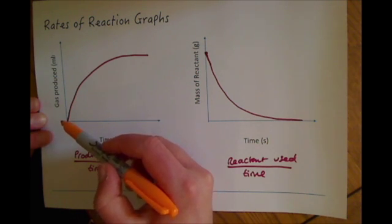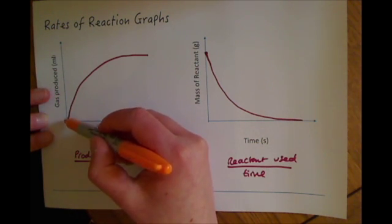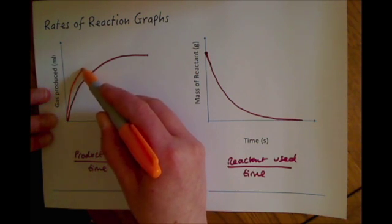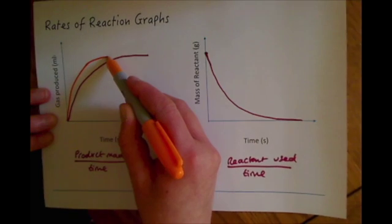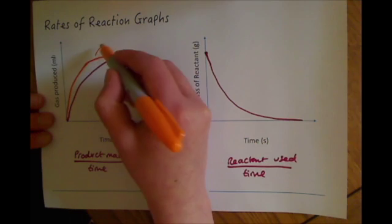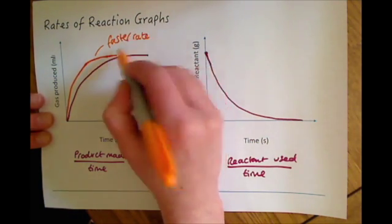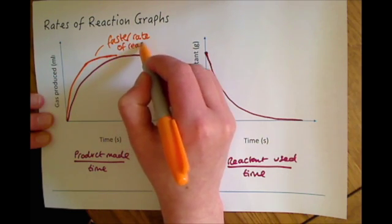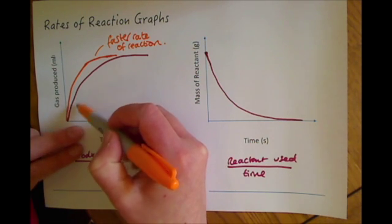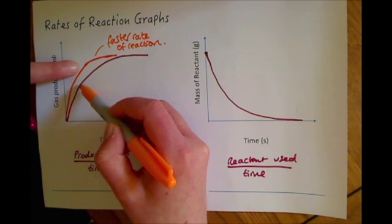Because it's a faster reaction, we're going to have more gas produced over time. So we draw the line above the existing one — that represents a faster rate of reaction. If you follow it up at a given time point, the orange line has a lot more gas produced than the pink line.